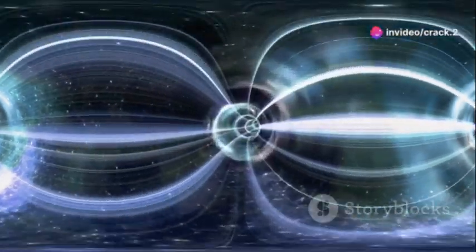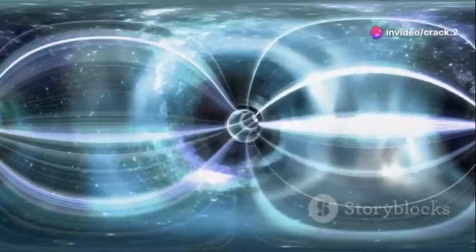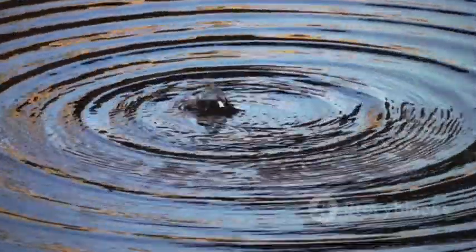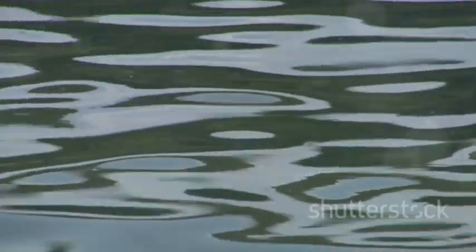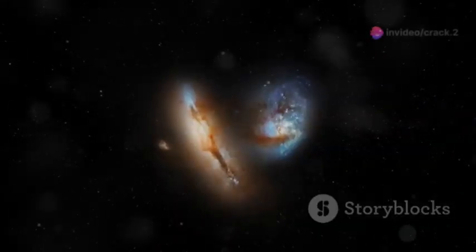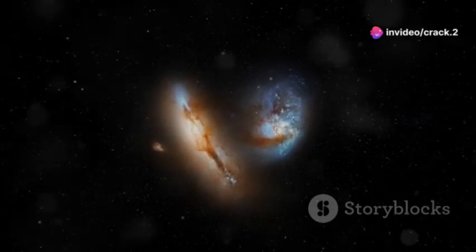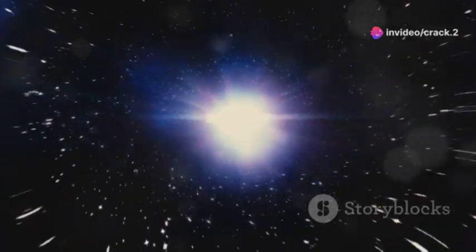Gravitational waves are disturbances in the curvature of space-time generated by accelerated masses. Imagine tossing a pebble into a still pond - the pebble creates ripples that spread outward from the point of impact. Similarly, when massive objects in the universe accelerate, they create ripples in space-time: gravitational waves.